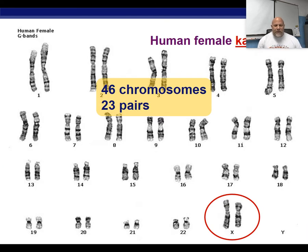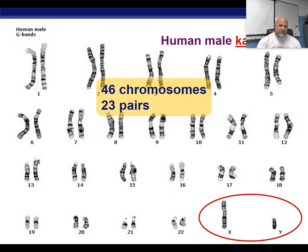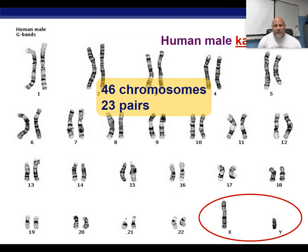If I'm a female, I will have 22 autosomes and 2 X chromosomes. And if I'm a male, I'm going to have 22 autosomes and an X and a Y chromosome. My goal in sexual reproduction is going to be to reduce the number of these chromosomes in my sex cells and mix up the chromosomes and mix up the genes on them.